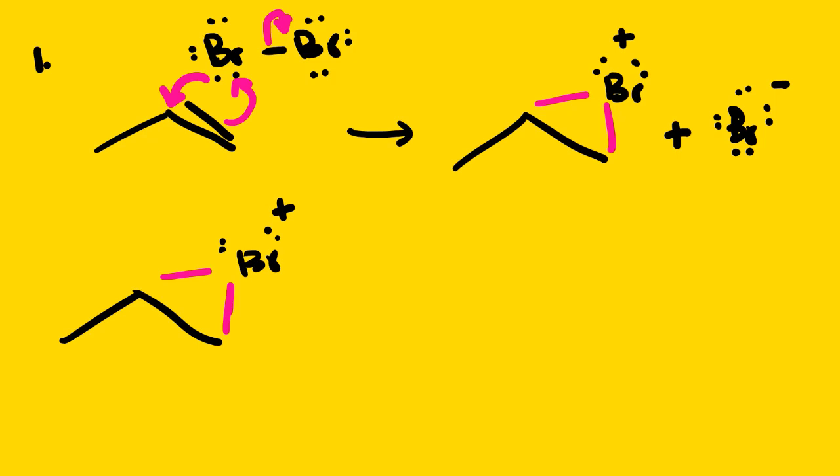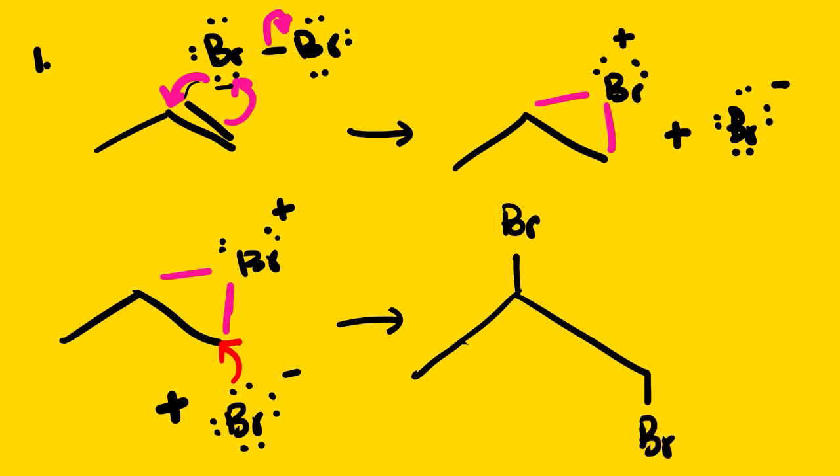So here we have, you can see it is like this. Then from here we have our halide ion. In this case you can see that these electrons they move to here, then we are going to attack. We attack this one this time from the back to form. And you should know that we